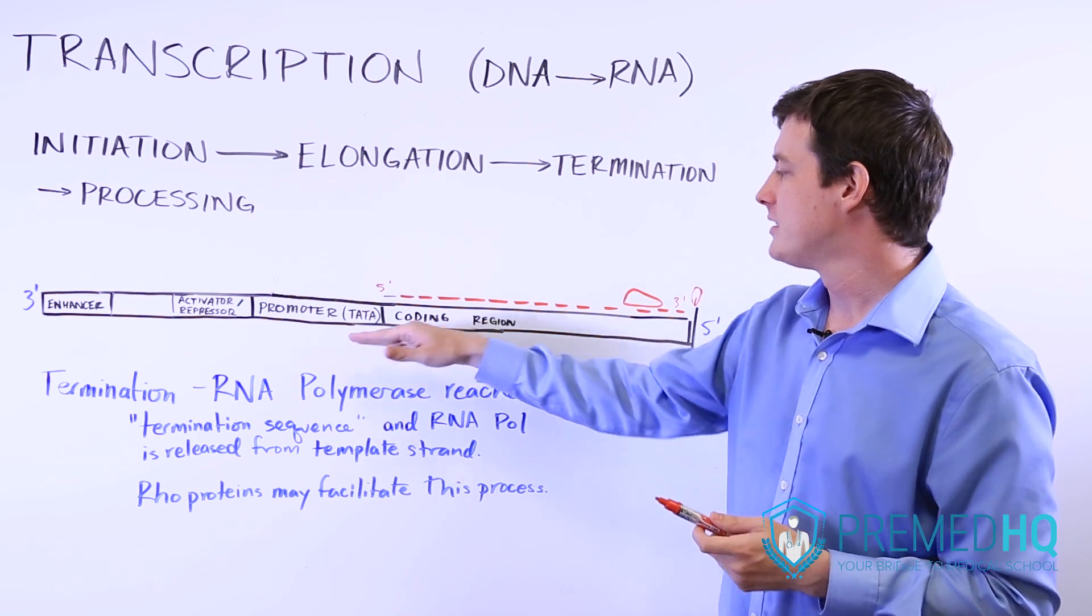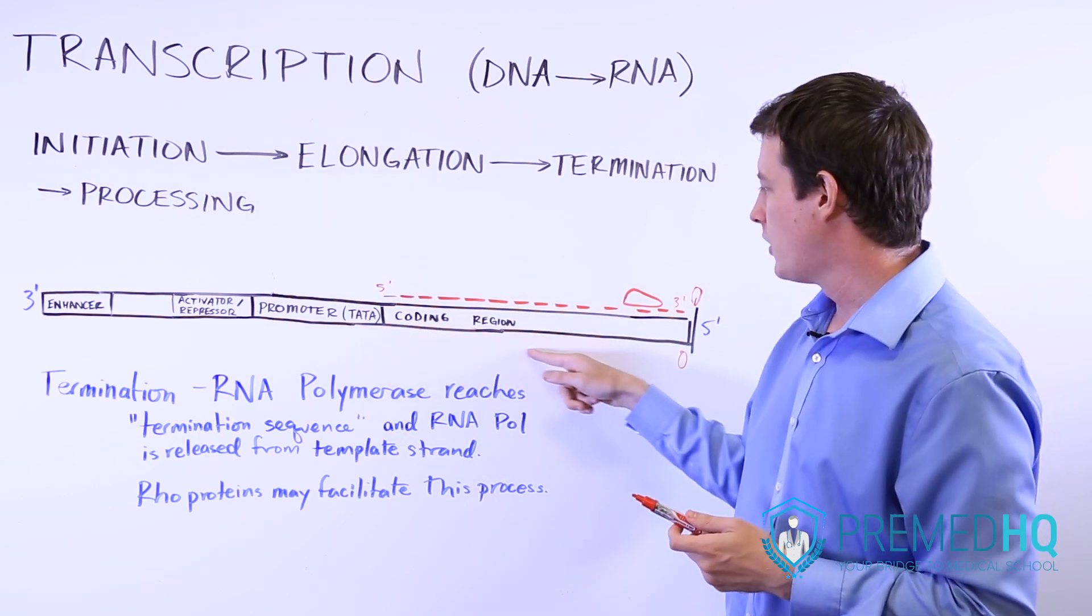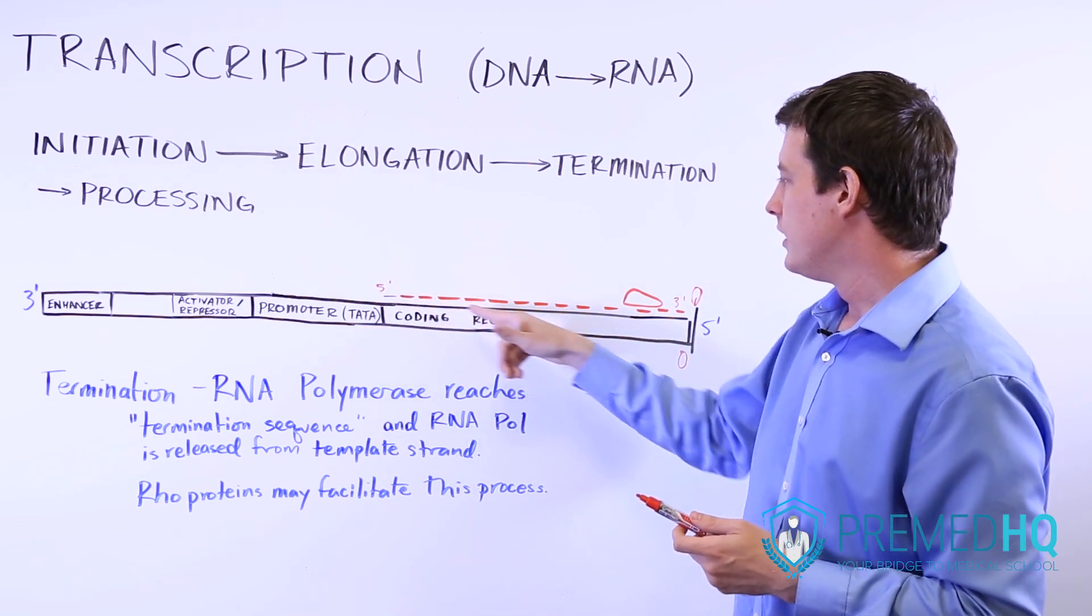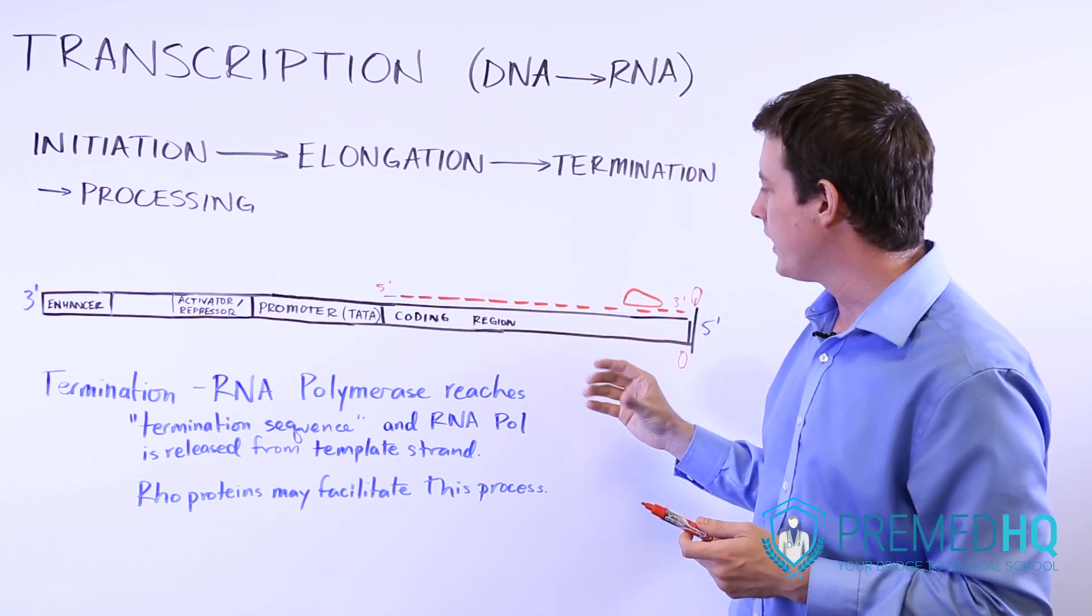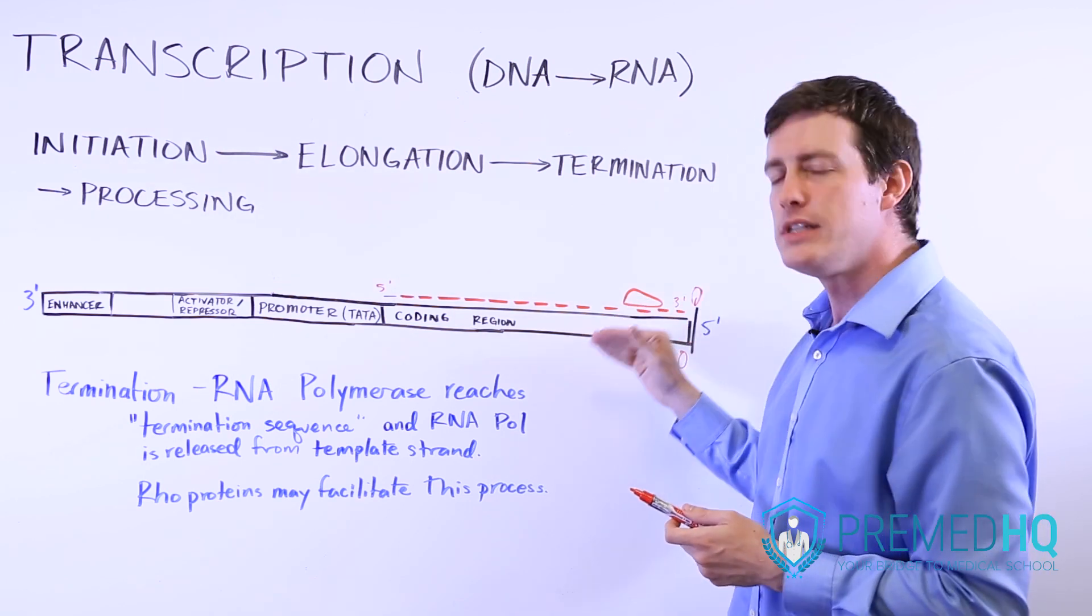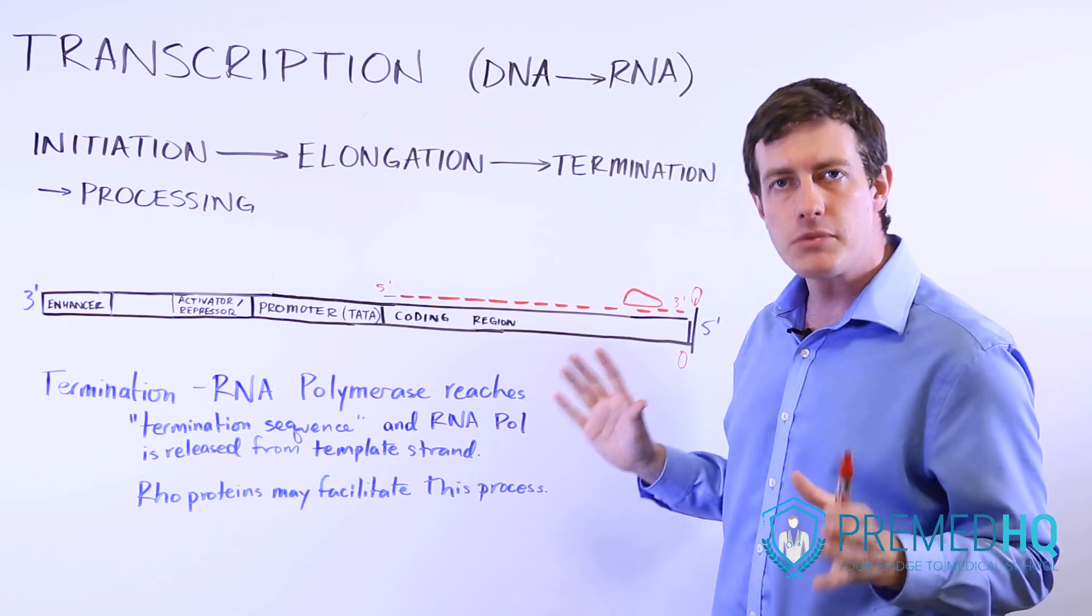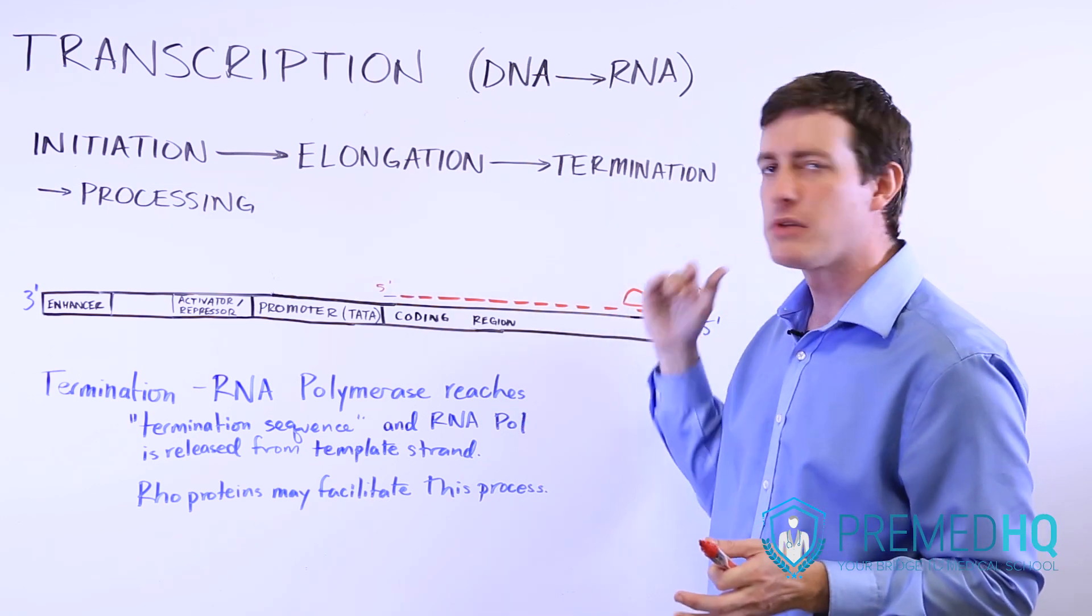Essentially that's all you need to know about termination. It essentially continues to move along this coding region and produce the primary transcript, and then at some point it gets a signal from the DNA that it's time to stop transcription and termination must occur.